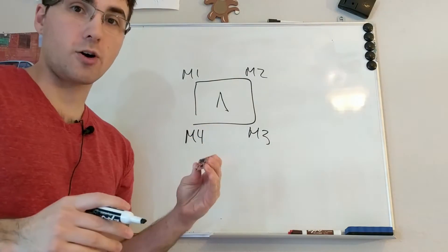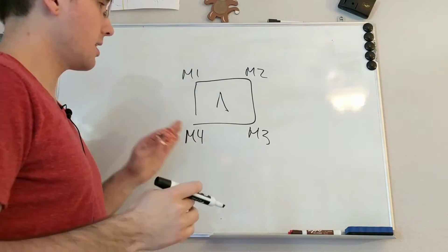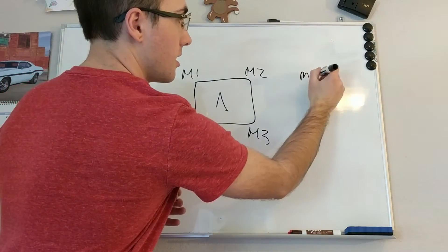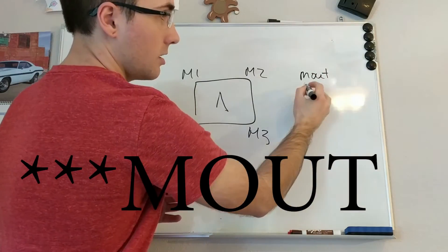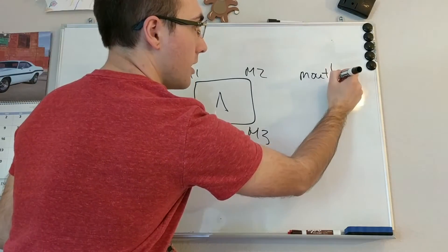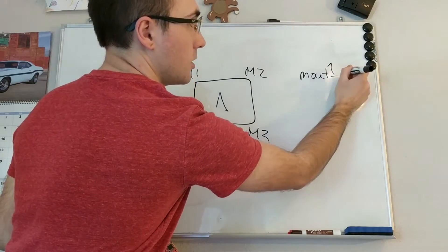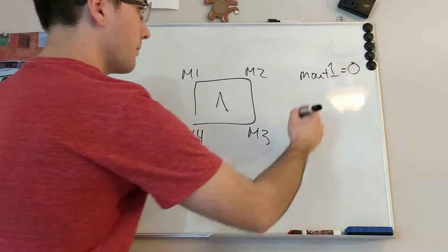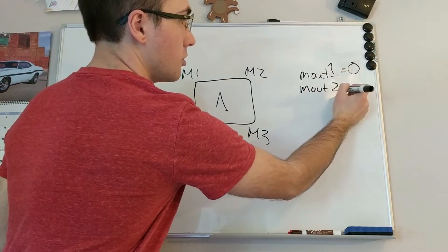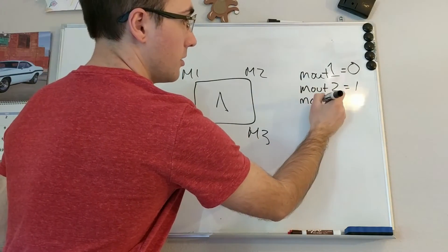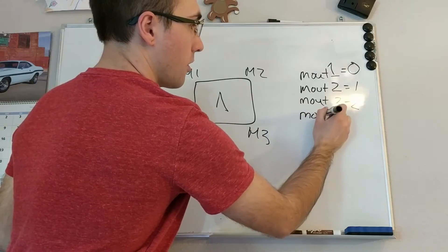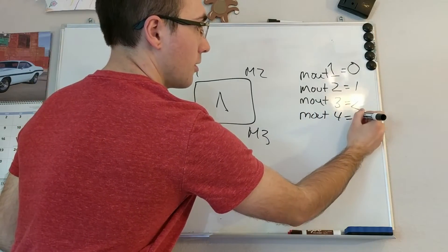Now by default in the actual settings this is the mapping and in the code it's considered M out for motor out. 1 equals 0 because it's the start of an array. So then you have motor 2, M out 2 equals 1, M out 3 equals 2, and M out 4 equals 3.